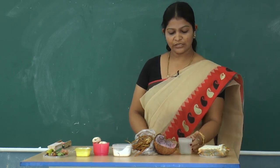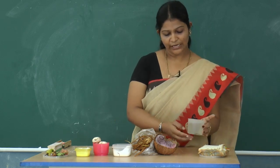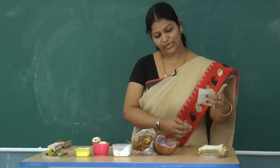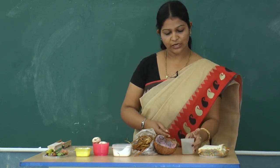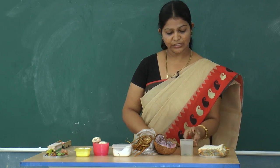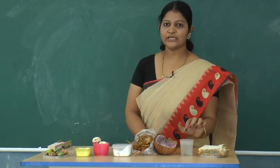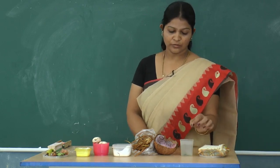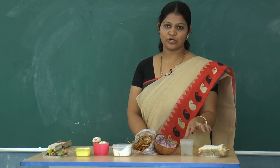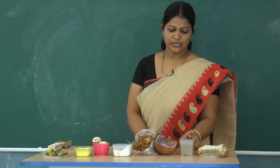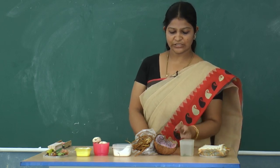Now you can see algae. Algae are green in color. Some algae are unicellular and some are multicellular. Here are some examples of algae you can see.